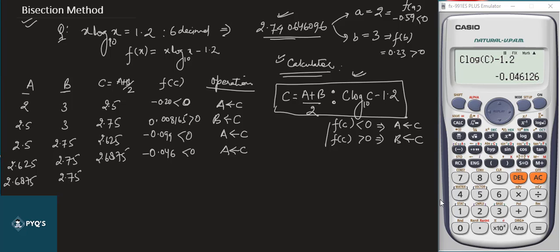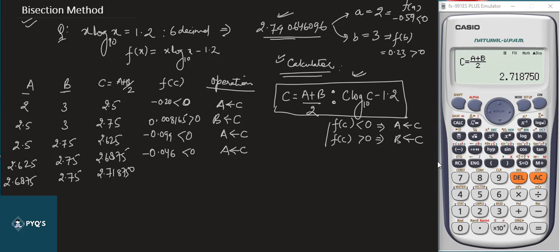Press CALC: A = Alpha C = 2.6875, B = 2.75. The calculator gives C = 43/32 = 2.718750, fixed to six decimal places. Press equals: f(C) = −0.019, less than zero, so A is replaced by C again. Continue this process — the calculator makes each iteration very quick.